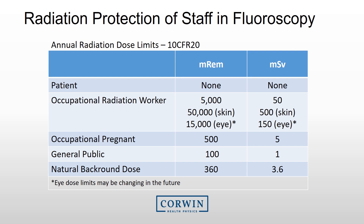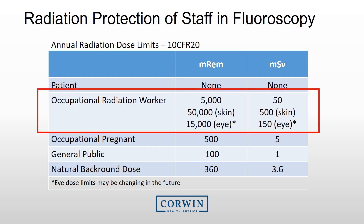Moving into radiation protection for staff during fluoroscopy, annual radiation dose limits apply to all occupational radiation workers: 5,000 mREM for the whole body, 50,000 mREM to the skin, and 15,000 mREM to the lens of the eye. Note there is a lower dose limit for workers with a declared pregnancy. Also note that the dose limit for the lens of the eye will likely be changing, as evidence suggests the threshold for cataracts is lower than originally thought.